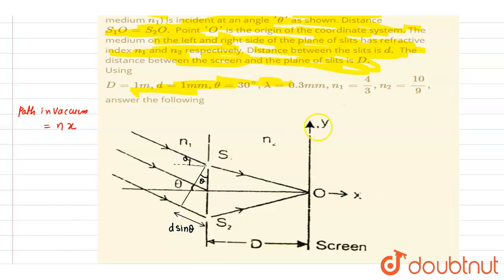So the theta values are already given here, it is 30 degree. So it is D sin 30. D is 1, so it is 1 sin 30, so it is half mm.